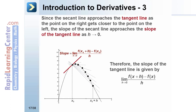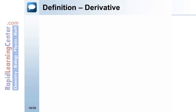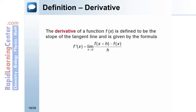We represent this using limit notation: the slope equals the limit as h approaches 0 of [f(x₀ + h) − f(x₀)] divided by h. Therefore, the slope of the tangent line is given by the limit as h approaches 0 of [f(x + h) − f(x)] divided by h. This brings us to the definition of the derivative.